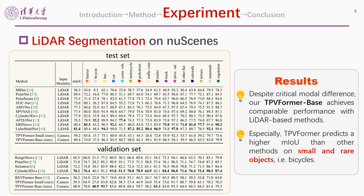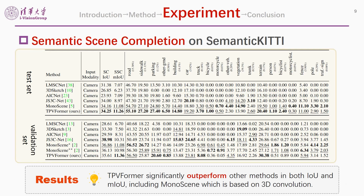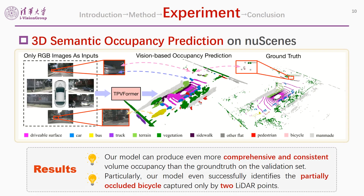Despite the critical model difference, TPVFormer base achieves comparable performance with lidar-based methods for lidar segmentation on nuScenes. Especially, TPVFormer achieves the highest IoU among other methods on small and rare objects such as bicycles on the validation set. For semantic scene completion on SemanticKITTI, TPVFormer also outperforms other methods in both IoU and mIoU on the test sets, including models based on 3D convolutions which are less efficient.